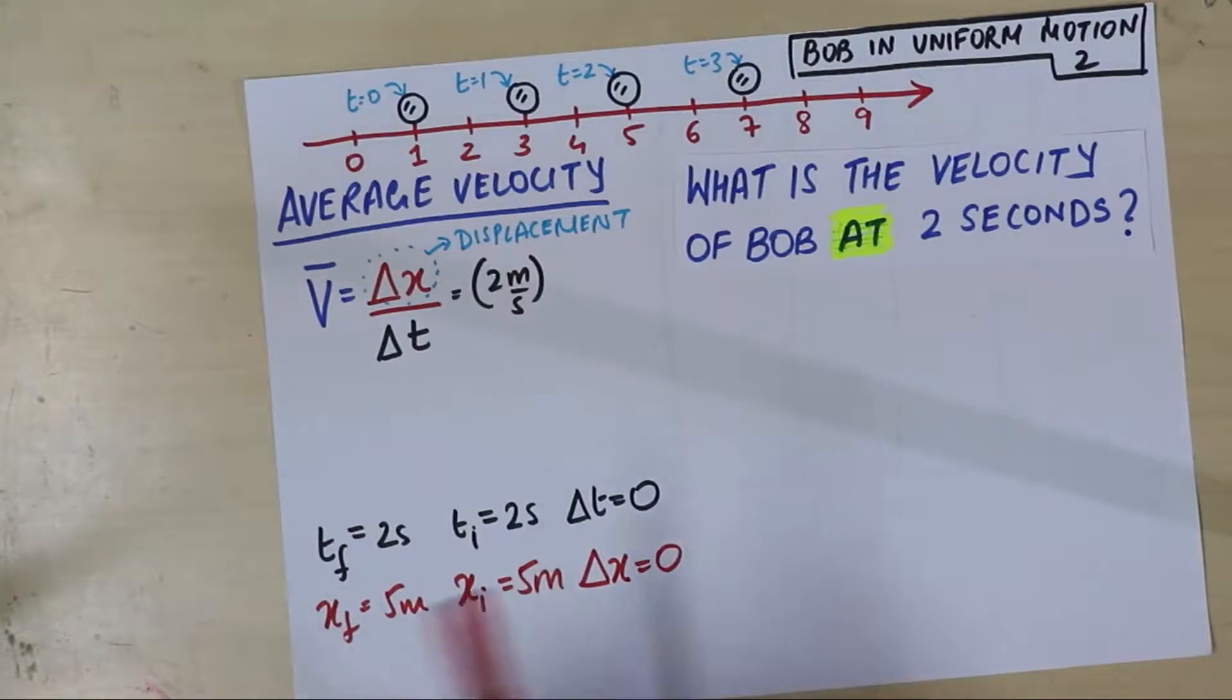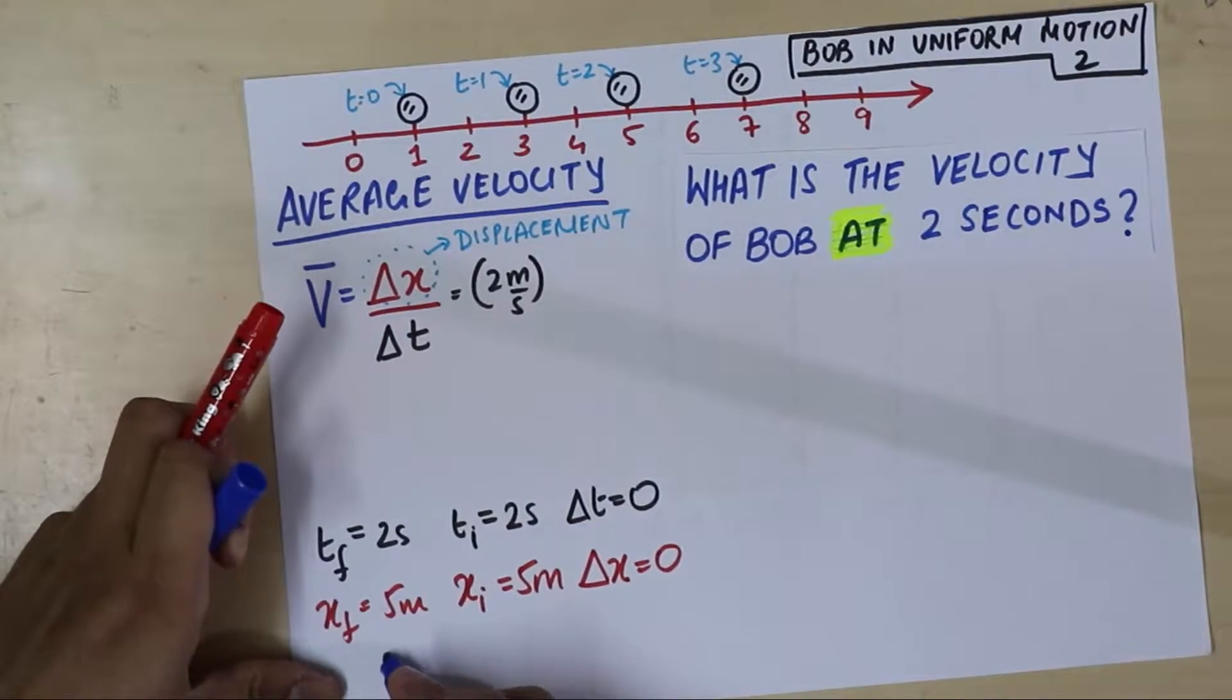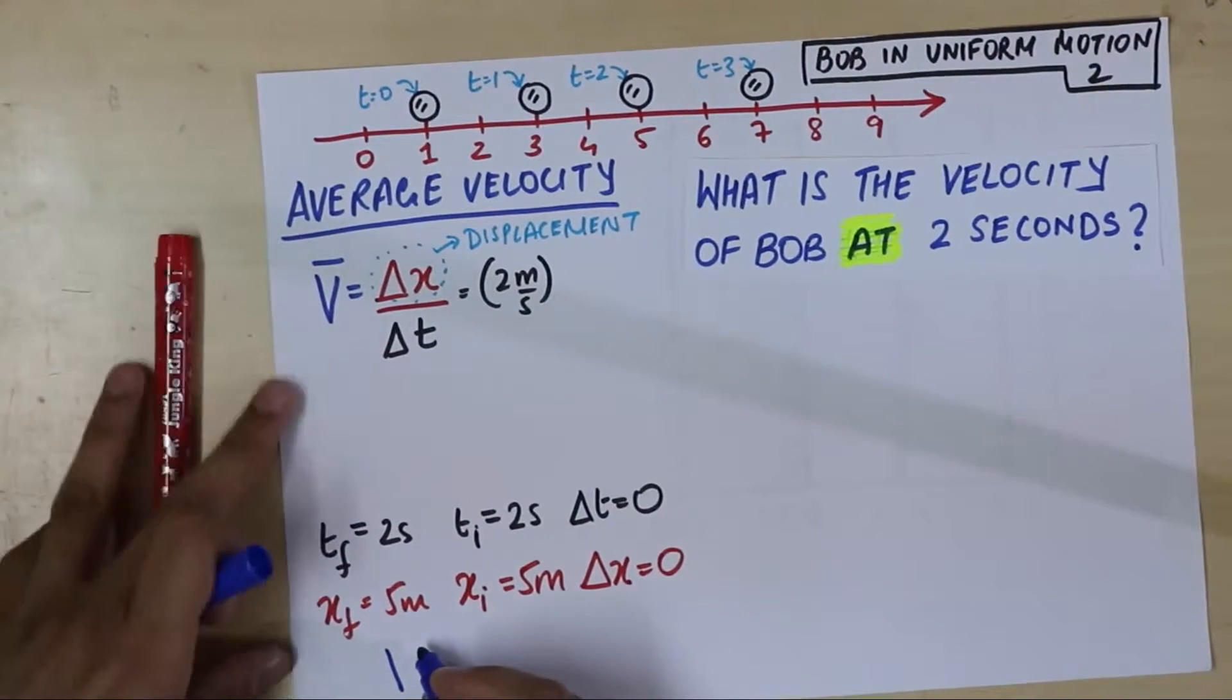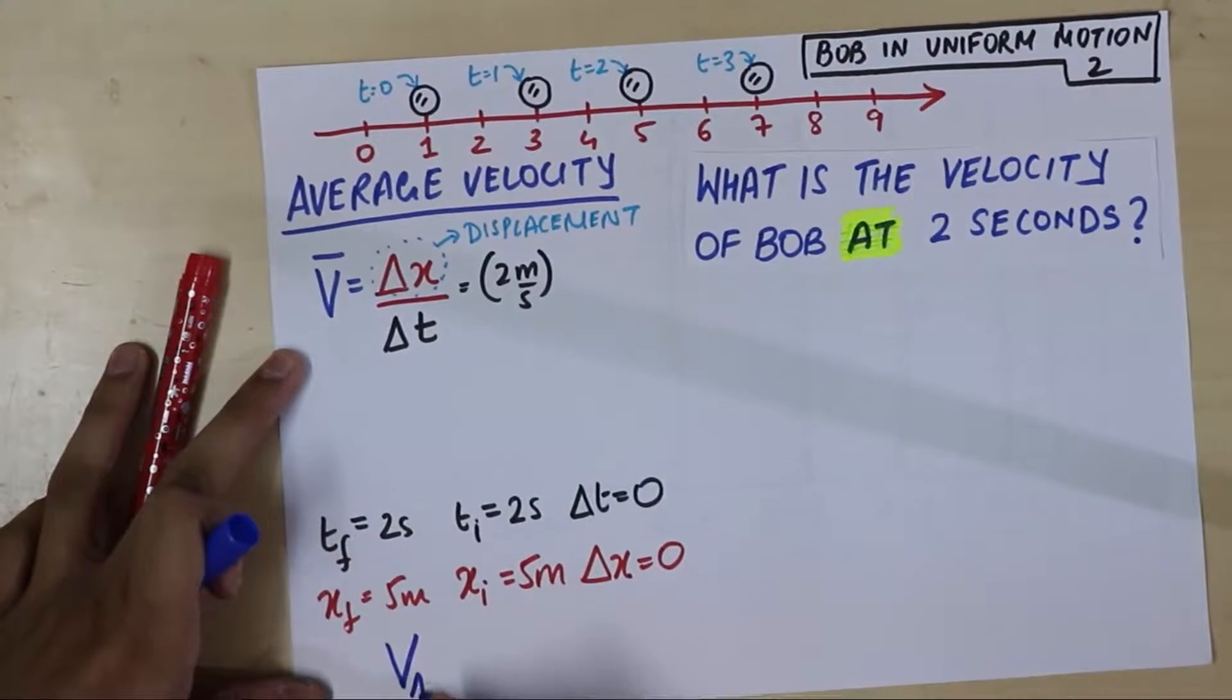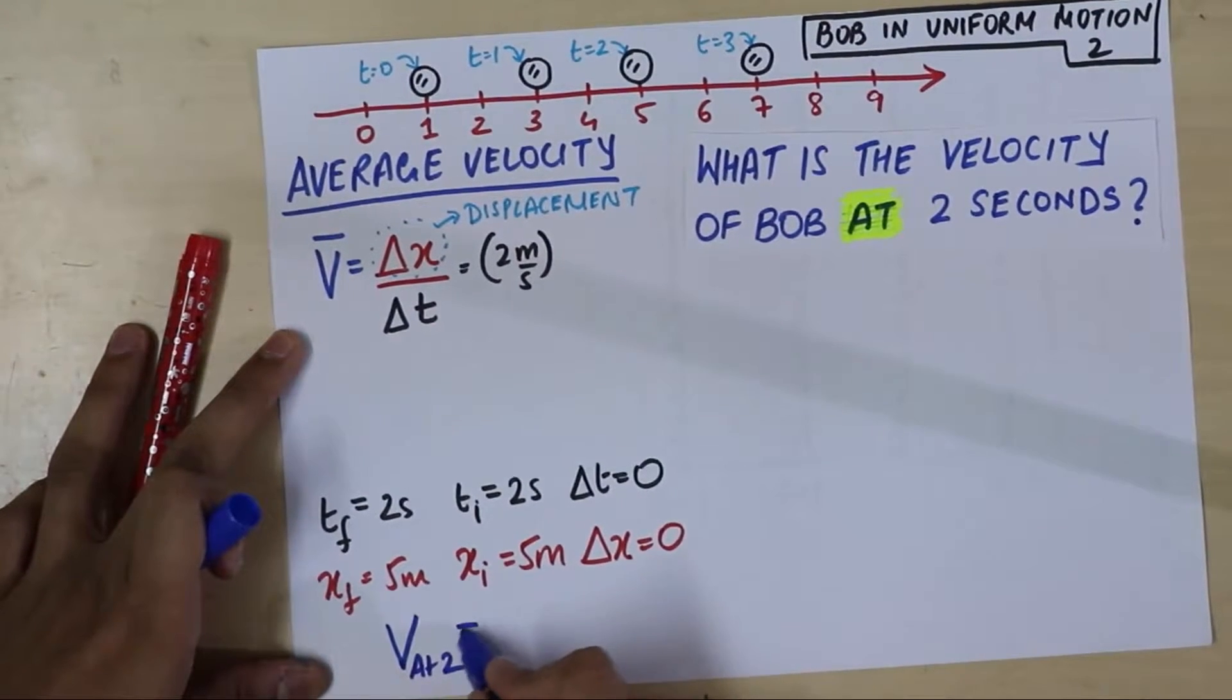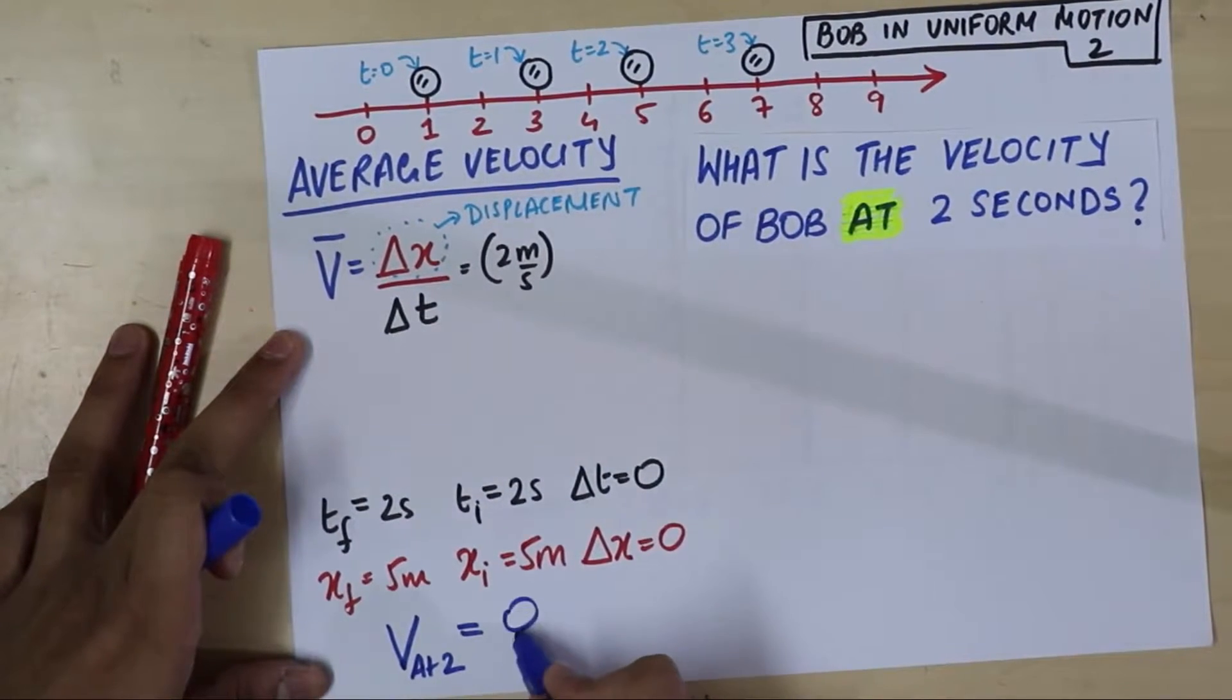So, our attempt to solution, that is the average velocity. Okay? I want you to concentrate. Average velocity at 2 seconds is going to be delta x divided by delta t is 0 by 0.